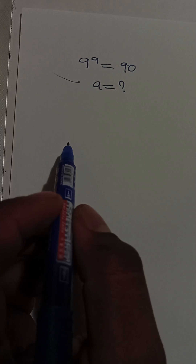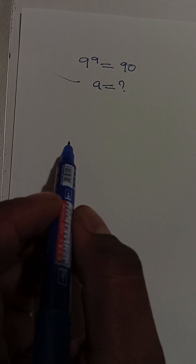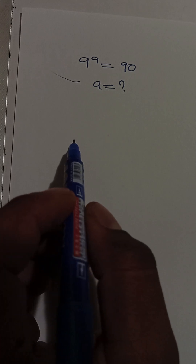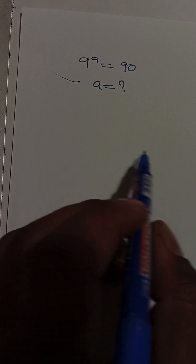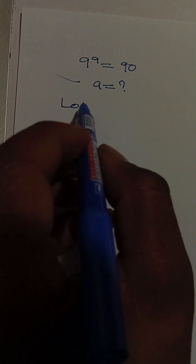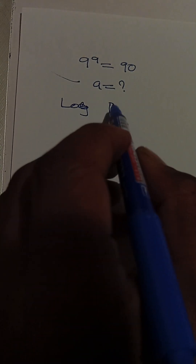The problem says 9^a is equal to 90. What is the value of a? To solve this, you apply logarithm to both sides — log both sides.